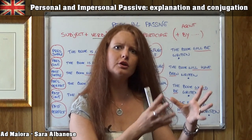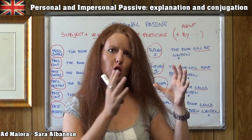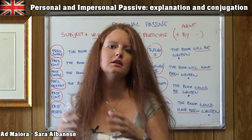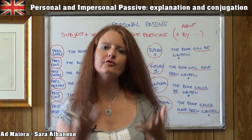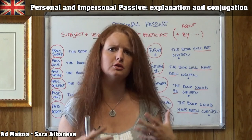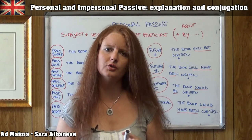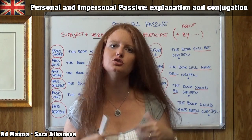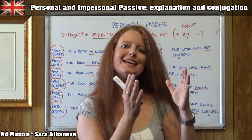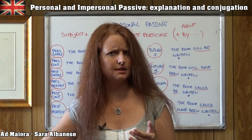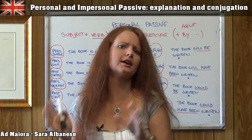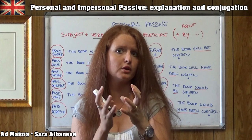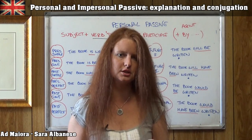Let's make an example. An author writes a book — the author is the subject in the active form, 'writes' is the active verb, and the book is the object. I can change it if I want to emphasize the object, the book, which becomes the subject in the passive form. The sentence becomes: 'the book is written by the author.' It's not necessary to add the agent — I can just say 'the book is written,' and it's perfectly correct. So the important part of the sentence is now the book.